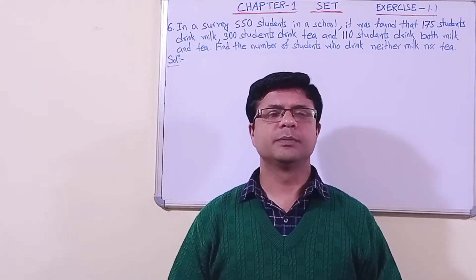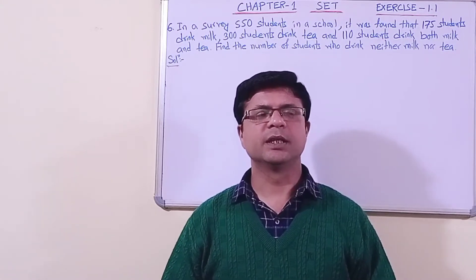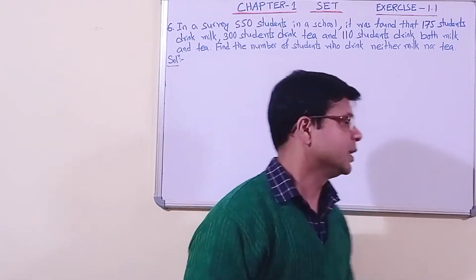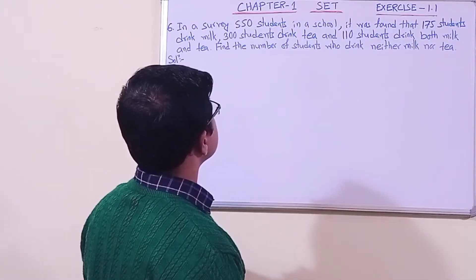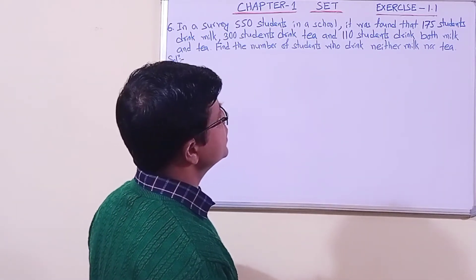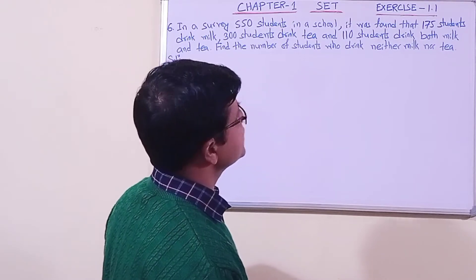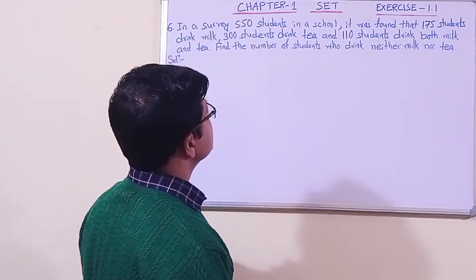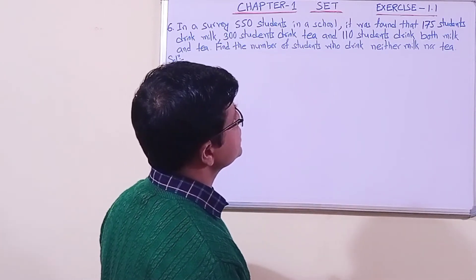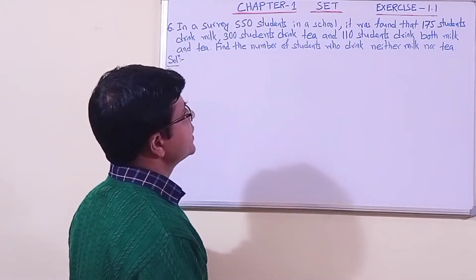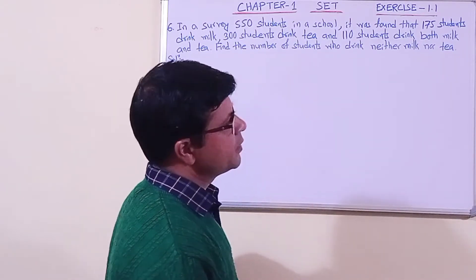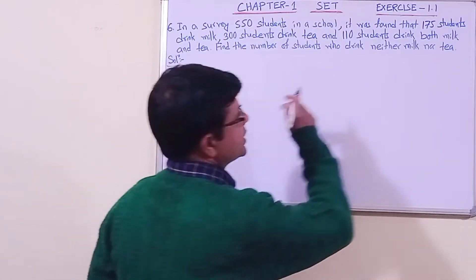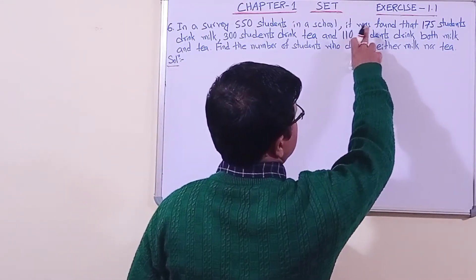Hello students, we are in Chapter 1 on Sets, Exercise 1.1. Today we have taken question number 6. Let us read the question: In a survey of 550 students in a school, it was found that 175 students drink milk, 300 students drink tea, and 110 students drink both milk and tea. Find the number of students who drink neither milk nor tea.